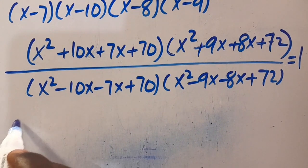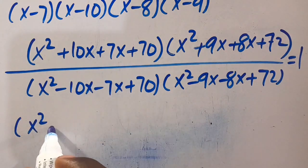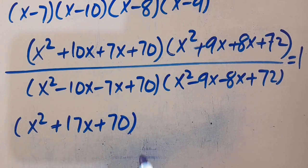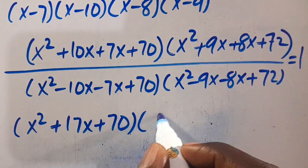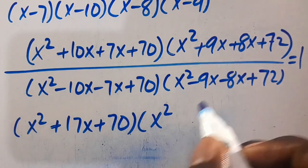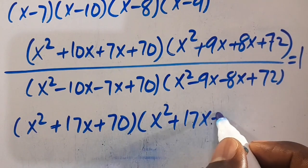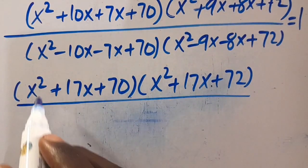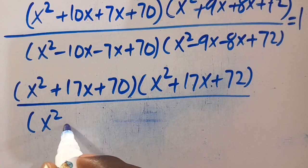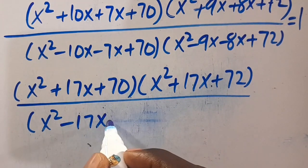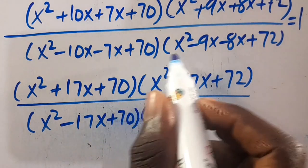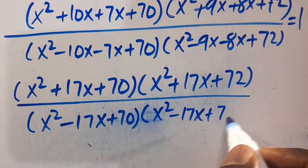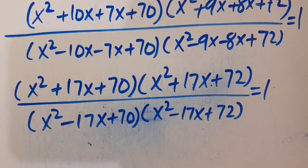Then let's rewrite it. We are going to have x squared plus 17x plus 70, times x squared plus 17x plus 72. All divided by x squared minus 17x plus 70, times x squared minus 17x plus 72. We set everything to equal 0.